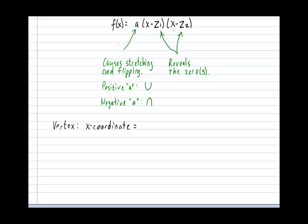And if you want to calculate the x-coordinate halfway between the two zeros, then the following formula applies: (z1 + z2) divided by 2. In other words, the average of the two zeros will reveal the x-coordinate.